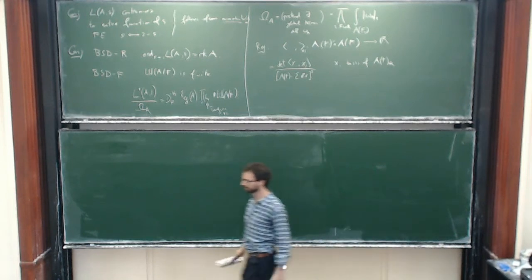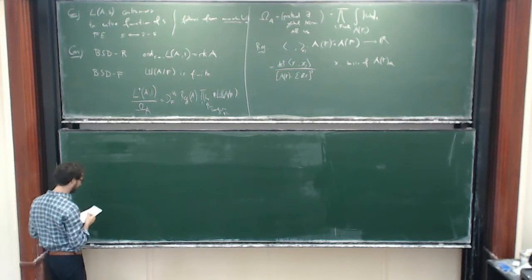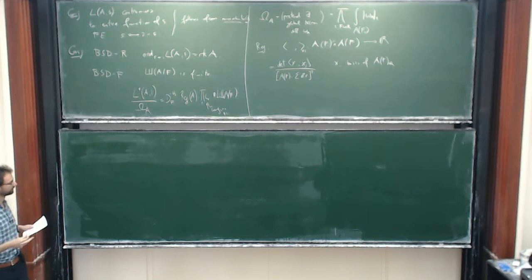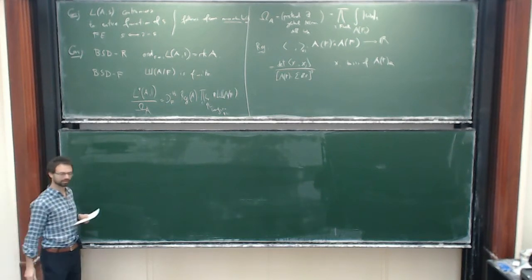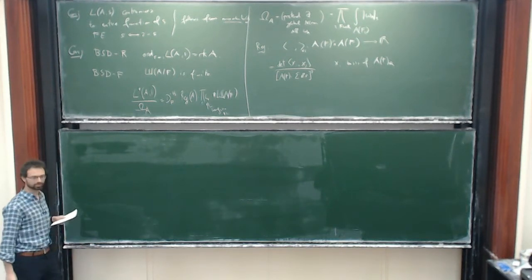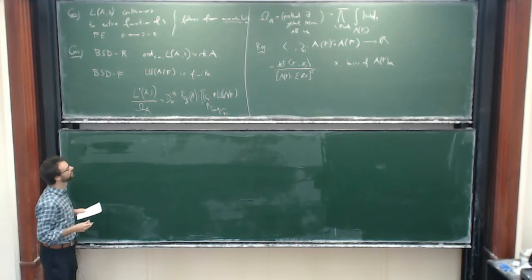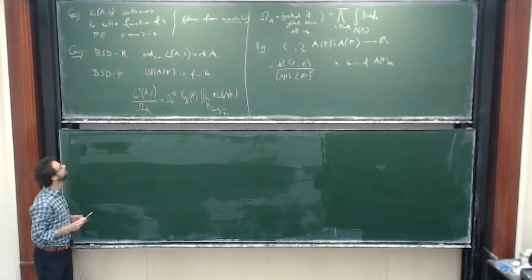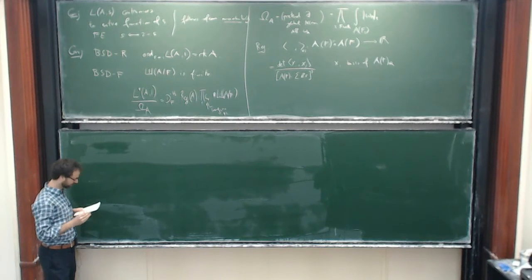For constructing points, we need a slightly stronger version of modularity: namely that our abelian variety is parametrized by a Shimura curve, so that it occurs in the quotient of the Jacobian of a Shimura curve. This is not always the case even if you know modularity — there are some unlucky cases, which I'll say more about in a second.